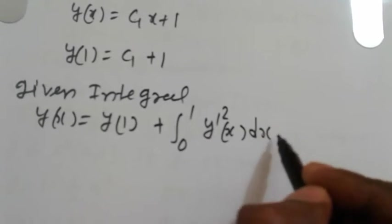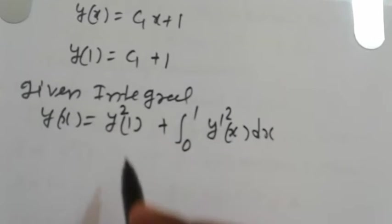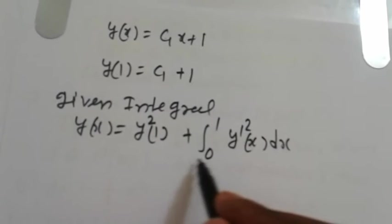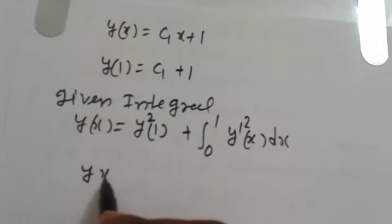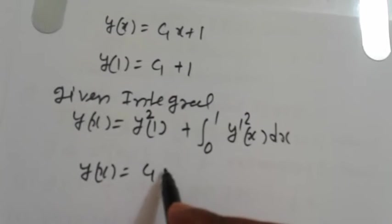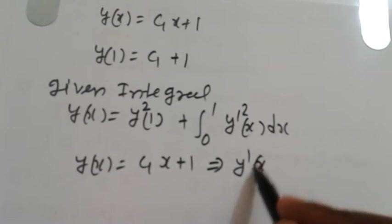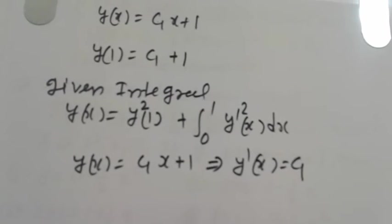And here this is a square. Putting the value, y(x) = C₁x + 1, so implies that y'(x) = C₁.